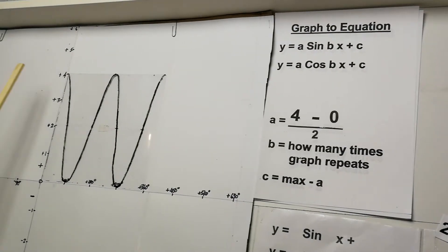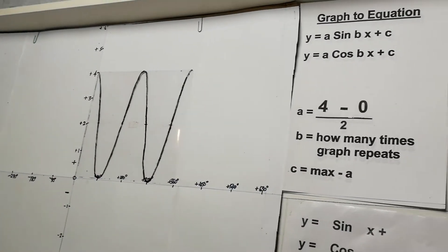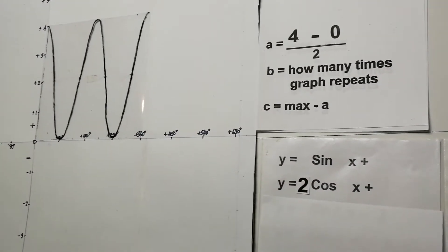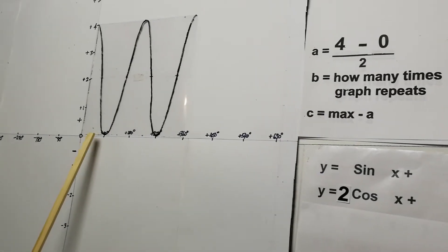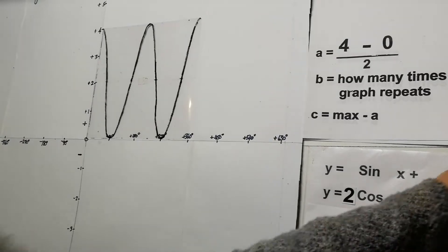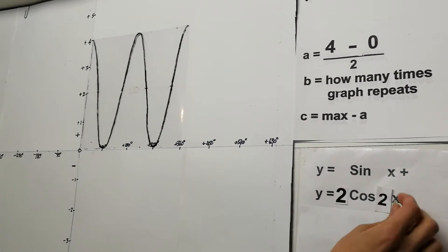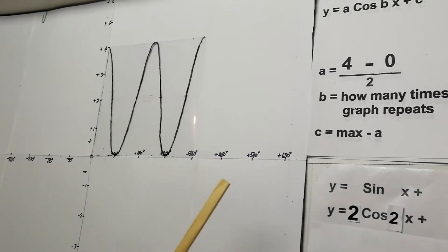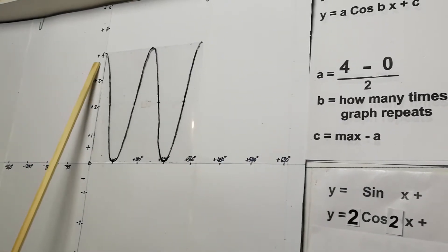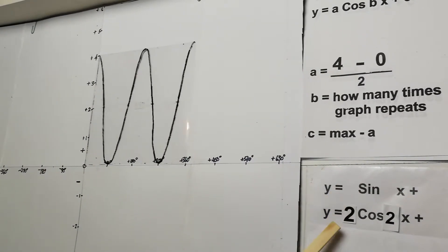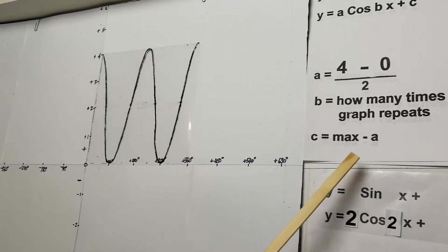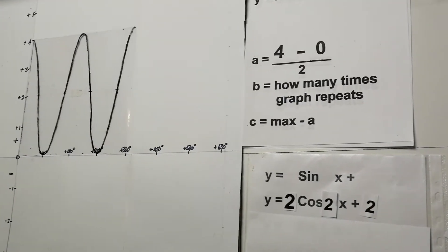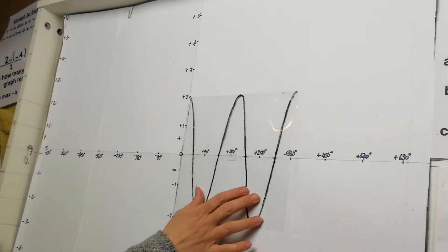Using the formula: 4 minus 0 = 4, divided by 2 = 2, so a = 2. It's a cosine graph. The graph touches the bottom twice, so b = 2. For c: the maximum is 4 minus the a value of 2 = positive 2. So the equation is y = 2cos(2x) + 2.